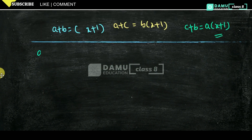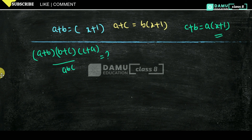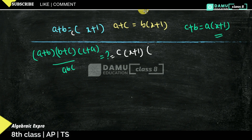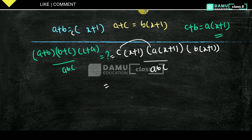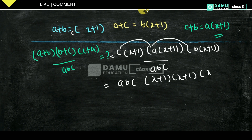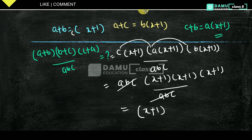Substituting: a plus b is c times (x plus 1), b plus c is a times (x plus 1), and c plus a is b times (x plus 1). So the numerator becomes c times (x plus 1), times a times (x plus 1), times b times (x plus 1). Taking a, b, c common gives a times b times c times (x plus 1) cubed, divided by a, b, c. The a, b, c cancel, leaving (x plus 1) cubed.